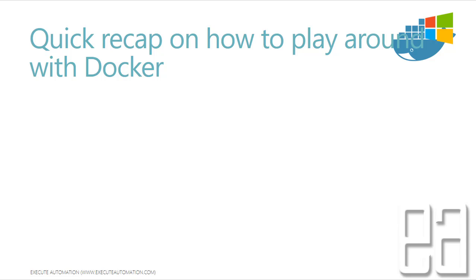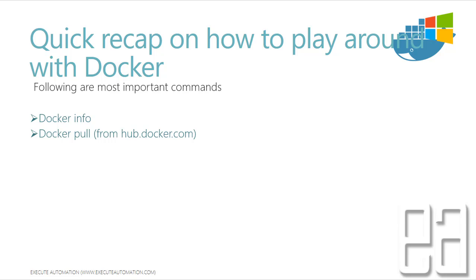Let's do a quick recap on how we play around with Docker. The following are the most important commands before we start working with Docker for Windows. Some of the commands are docker info, which we saw in our previous videos. Then docker pull, which pulls images from hub.docker.com. Then docker images, which shows what images have been downloaded into your Docker. And then there is docker run, which runs images as containers. You can show the processes running in Docker using docker ps, and for complete information you can use ps -a.